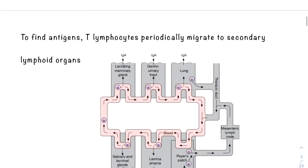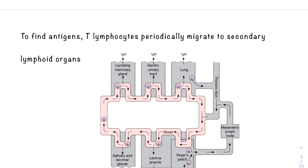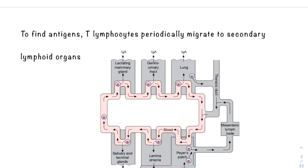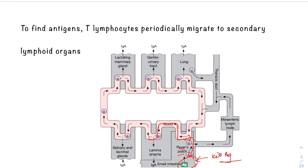To find antigens, T lymphocytes periodically migrate to the secondary lymphoid organs. For example, when an antigen lies in Peyer's patches, the leukocytes follow steps of migration to the Peyer's patches to attack and kill the antigen. This is how leukocytes migrate to the secondary lymphoid organs.